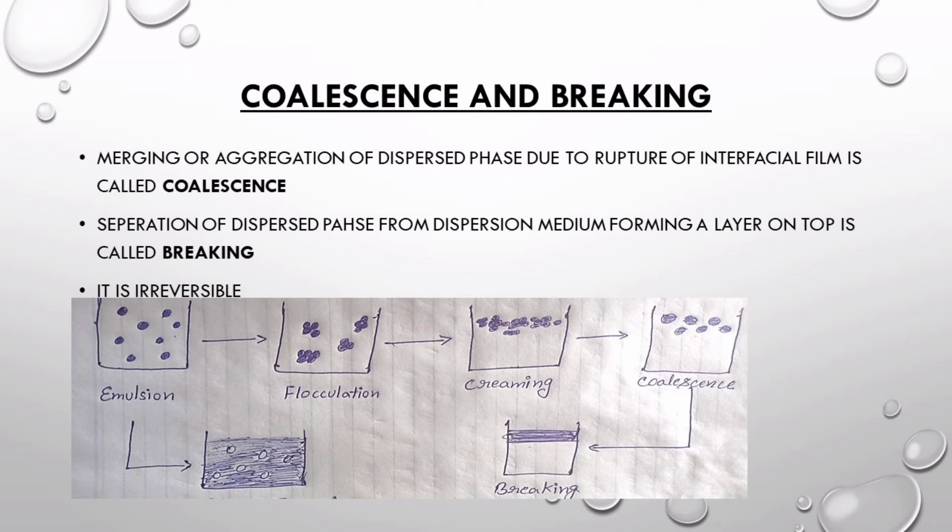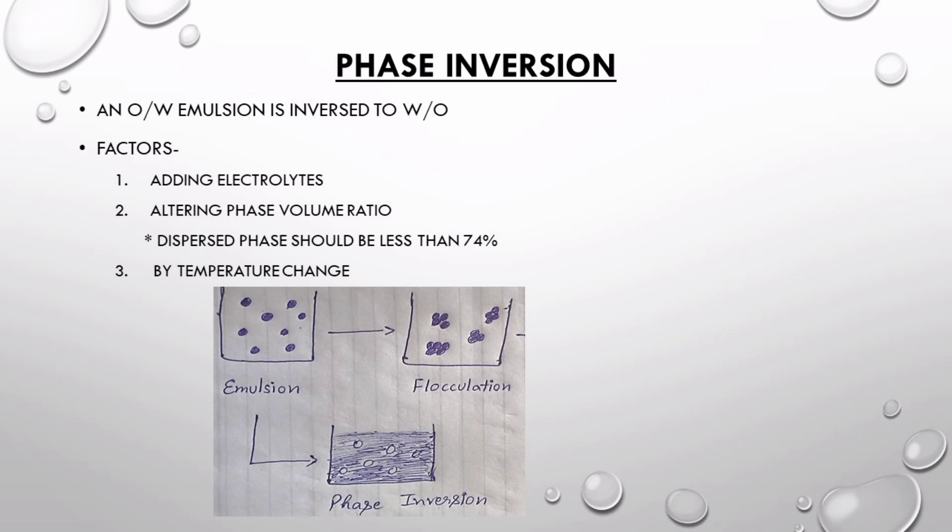Coalescence leads to breaking, which is an irreversible process. In breaking, these bigger globules have again fused and separated into different layers. You can now see a clear line of difference between the dispersed phase and dispersion medium.